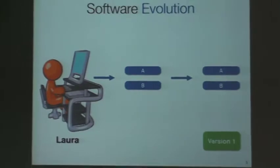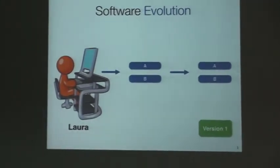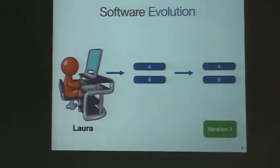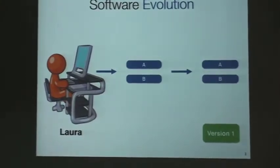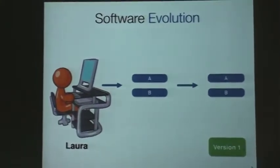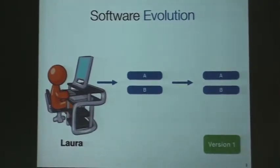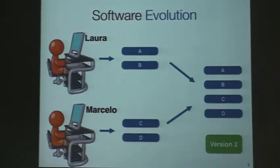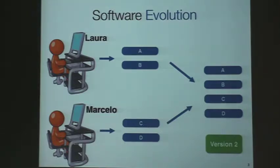We think in change — something is changing. For this presentation I have this example: we have a developer called Laura, she created some classes A and B and she did a commit over a project, so this is version one. Then time passed and Marcelo joined Laura, creating his classes while Laura is still working on hers, and they did a commit — this is version two.